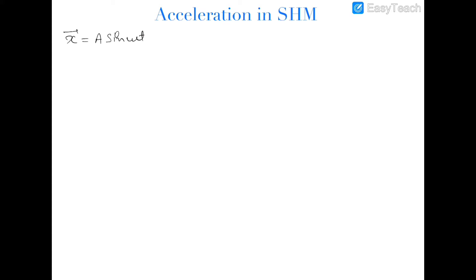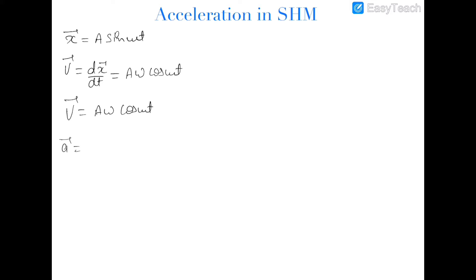Because I have assumed its initial phase to be zero, this is the displacement of the particle at some time t. To find out the velocity of the particle we differentiate this displacement with respect to time, and that would be equal to a omega cos omega t. So v is equal to a omega cos omega t. To find out the acceleration we again differentiate this velocity with respect to time, and it would be minus a omega square sine omega t.